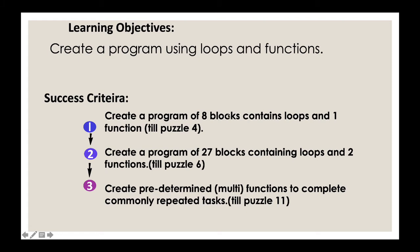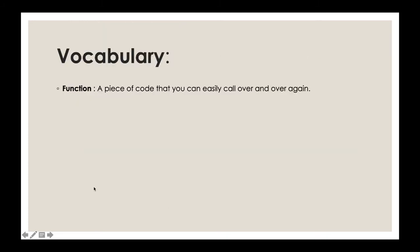Lesson 16 Functions with Harvester — our learning objective is to create a program using loops and functions. Success criteria: create a program of eight blocks containing loops and one function — complete puzzle four. Create a program of 27 blocks containing loops and two functions — complete puzzle six. Then create pre-determined multi-functions to complete commonly repeated tasks — complete puzzle eleven. After puzzle 11, there are puzzles 12, 13, and 14.